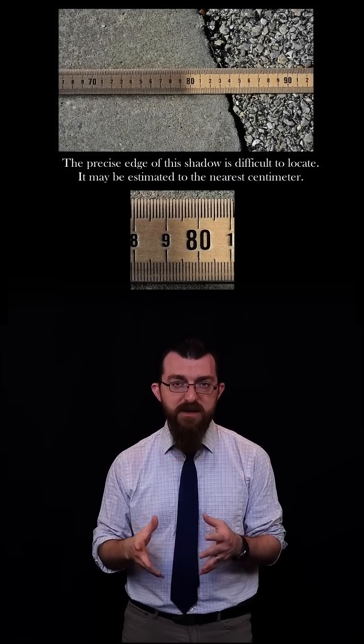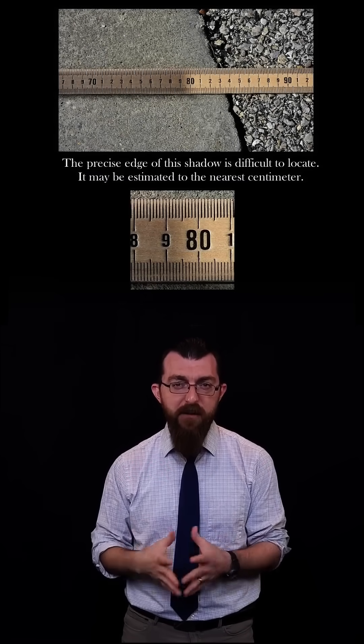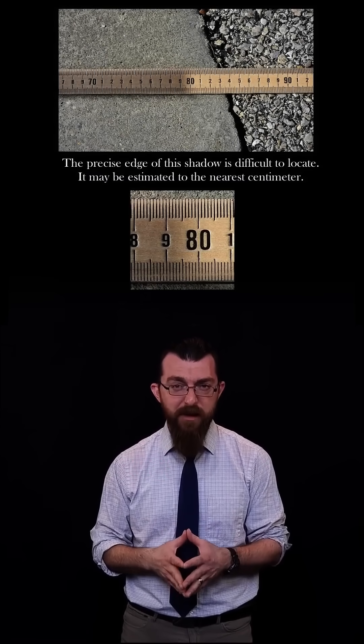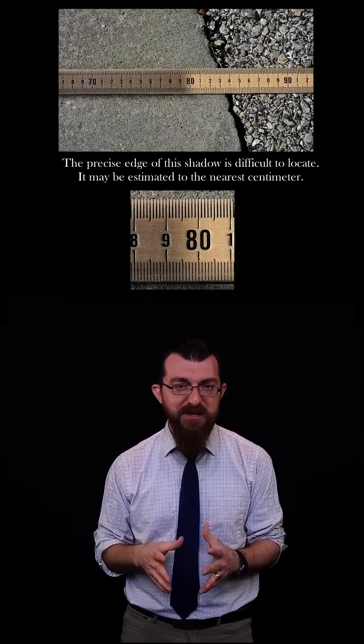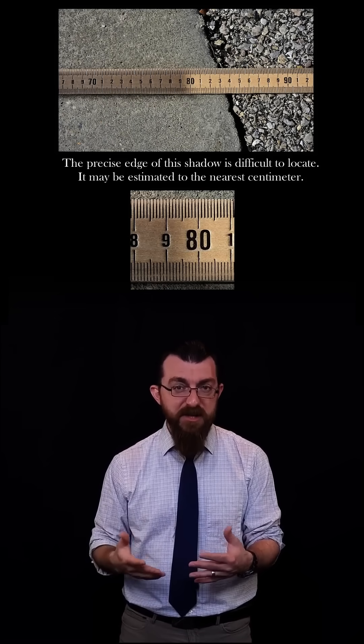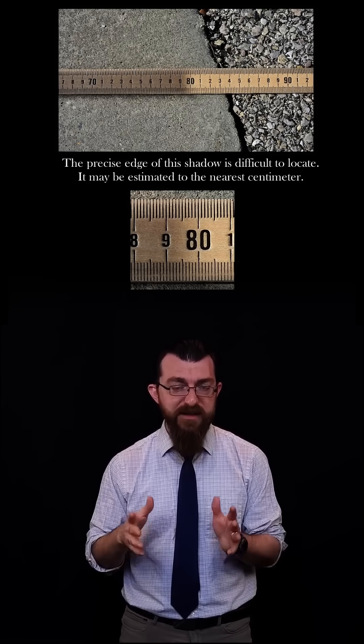Diffraction and the angular size of the Sun cause the boundary of the shadow to have a poorly defined edge. This makes it difficult to get a precise measurement of the shadow's length, though a meter stick shadow can still be estimated to the nearest centimeter.